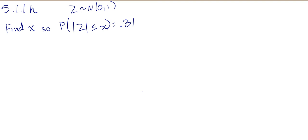In 5.1.1H, we're told that Z is normally distributed with a mean of 0, standard deviation of 1. We're going to find X so that the probability that the absolute value of Z is less than or equal to X equals 0.31.